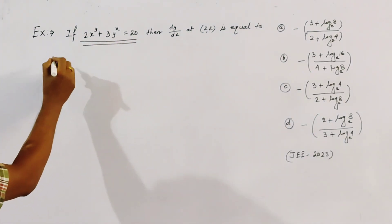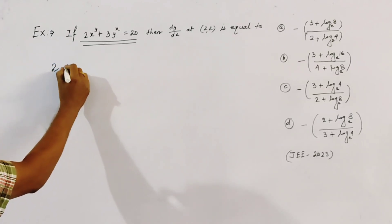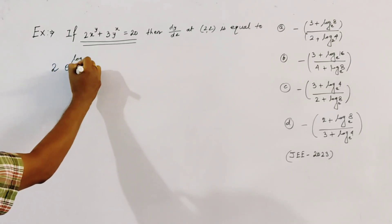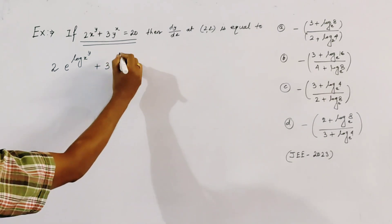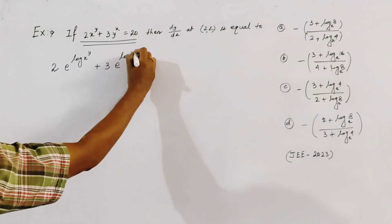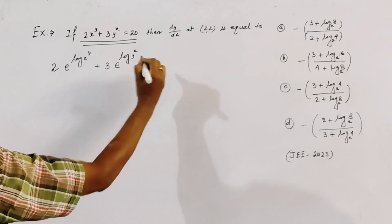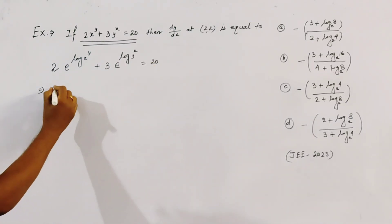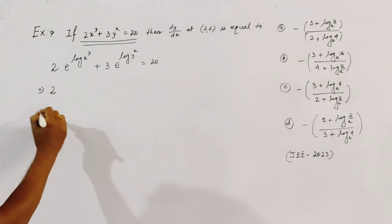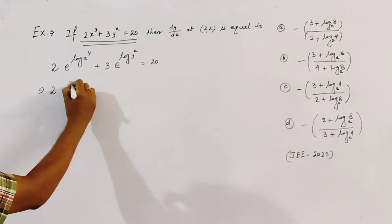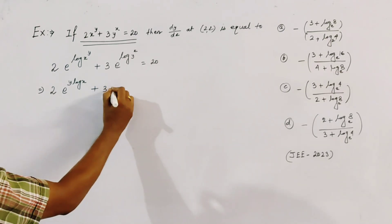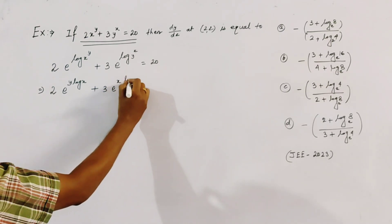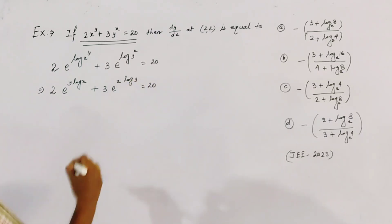To differentiate this type of term, we write x^y as e^(log x^y) and y^x as e^(log y^x). So the equation becomes 2·e^(y·log x) + 3·e^(x·log y) = 20, using the property of logarithms.